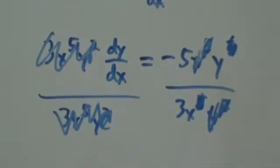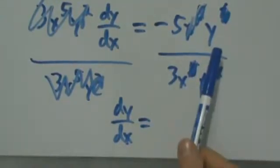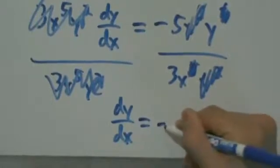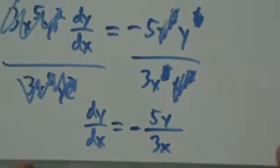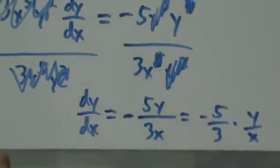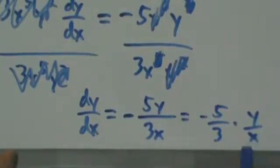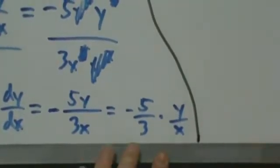So dy/dx equals negative 5y over 3x. We can also write that as negative 5/3 times y/x. That's a nice simple expression — but we're not done yet because we wanted d²y/dx², the second derivative. The second derivative is just the derivative of the first derivative, so we take the derivative of what we just found.